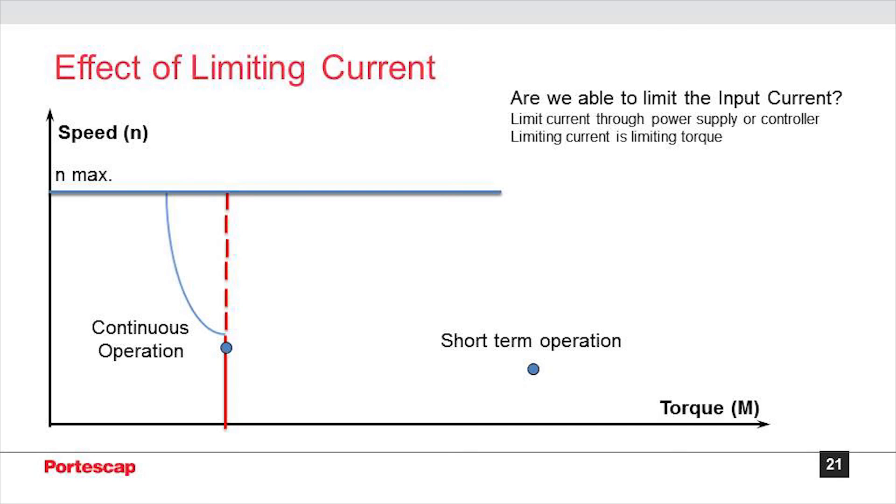We have understood that if we limit the current, the torque would be limited as well. In an application, the power supplier and the controller used may have some current limitations which may result in limiting the torque from the motor. This would affect the continuous and short-term operation of the motor. Due to the lowering of the current, the load operating points cannot be easily handled by the motor which they are designed for.